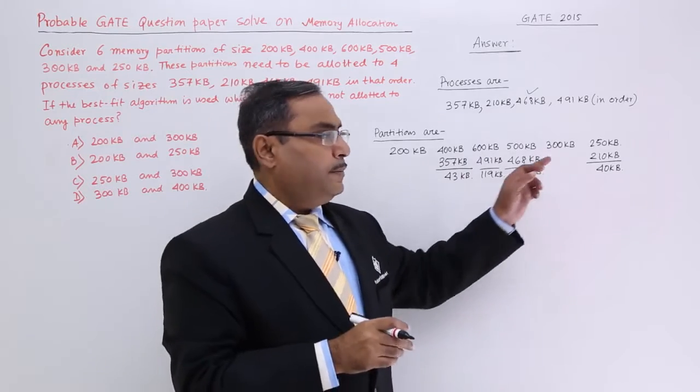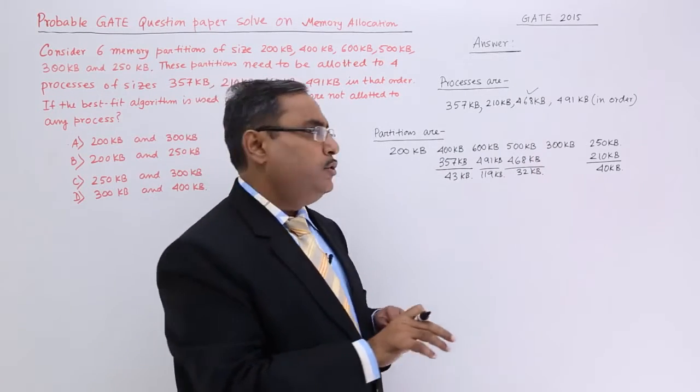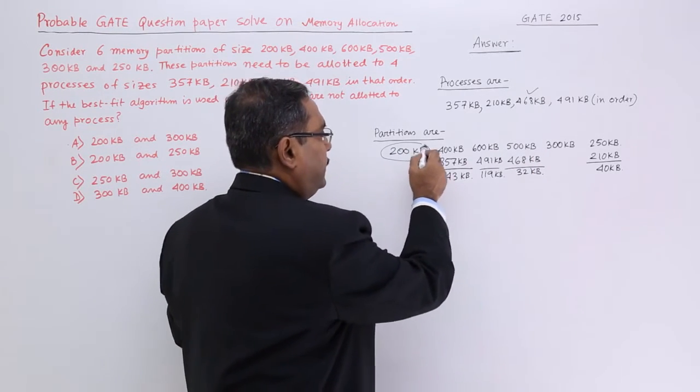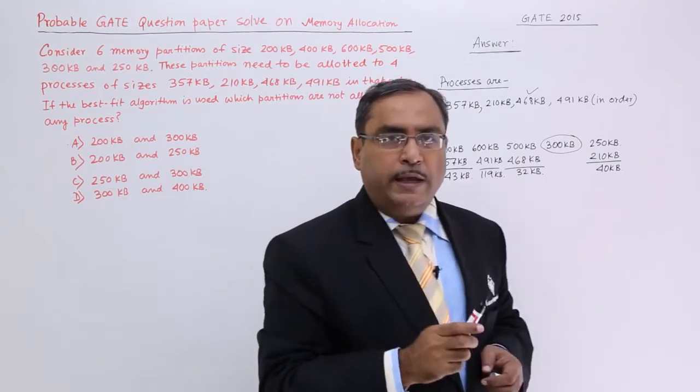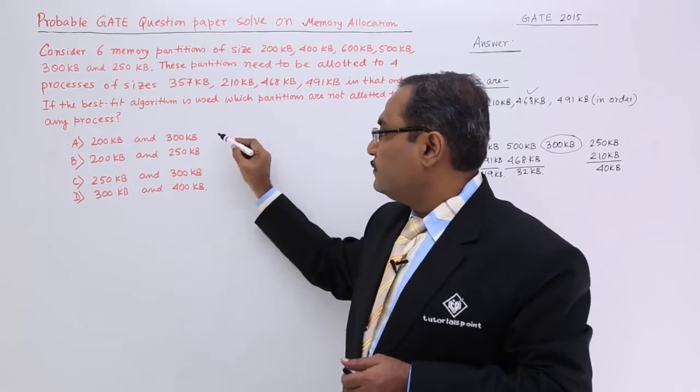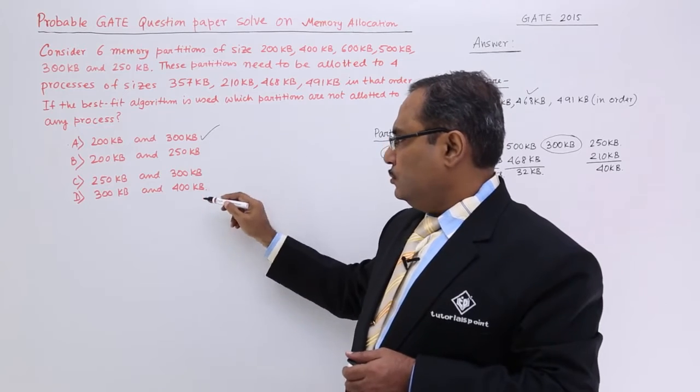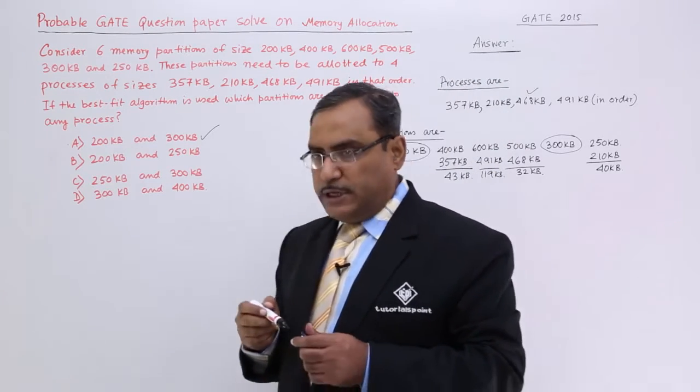Now 200 and 300 KB these two memory spaces will remain unallocated. I shall have to find which option they are having in the answer. 200 of the first two options. Yes, that option is A.